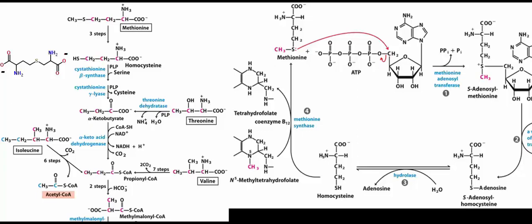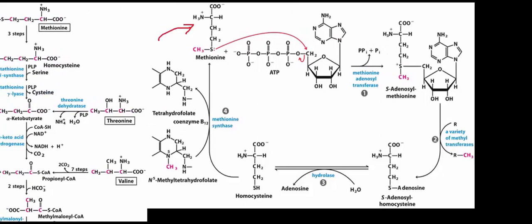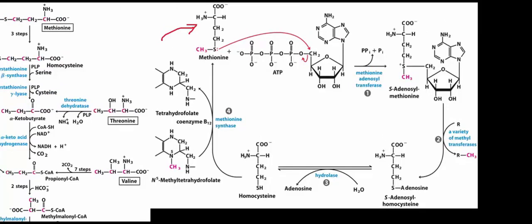Whether you realize it or not, you're actually already familiar with part of the catabolic pathway for methionine, shown here on the right side of the screen — the SAM cycle. Here is methionine. Methionine is first consumed by methionine adenosyl transferase, which is an unusual beginning to an enzymatic pathway because we have to consume an ATP first. That reaction gives you SAM, or S-adenosyl methionine.